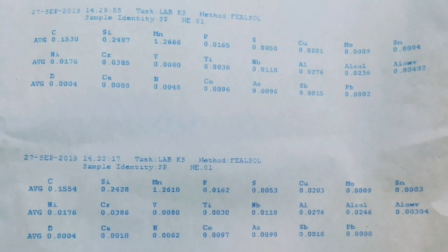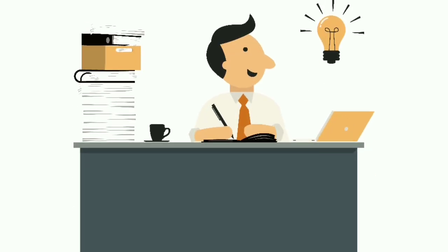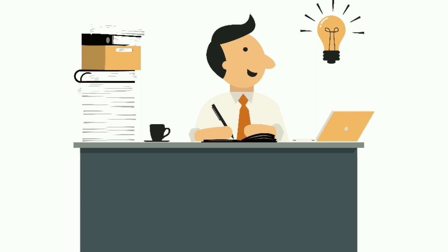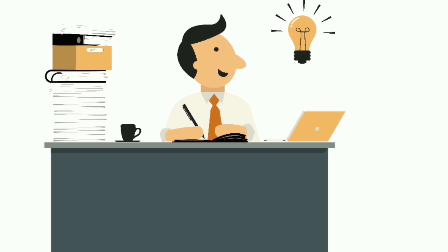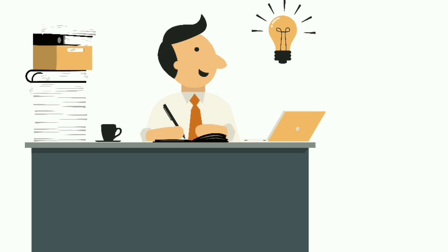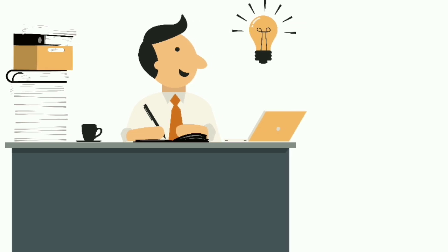Dan berikut adalah contoh hasil yang dibaca di alat tersebut. Sangat jelas persentase kandungan unsur kimia pada logam sampel material tersebut. Di dalam perencanaan engineering, wajib kita harus mengetahui ilmu bahan teknik agar kita tidak salah desain yang bisa mengakibatkan kerugian yang besar.